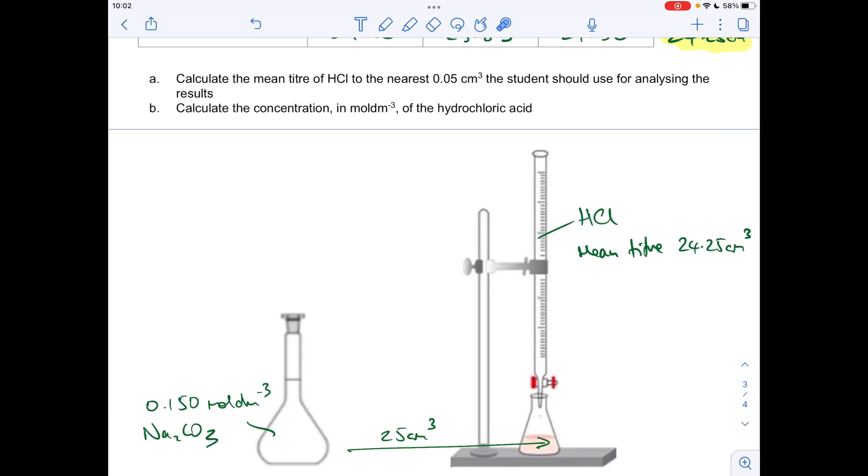Hydrochloric acid is added to a 50 cm cubed burette. Most burettes are 50 cm cubed, but remember we've just established from part A that the mean titra was 24.25 cm cubed.